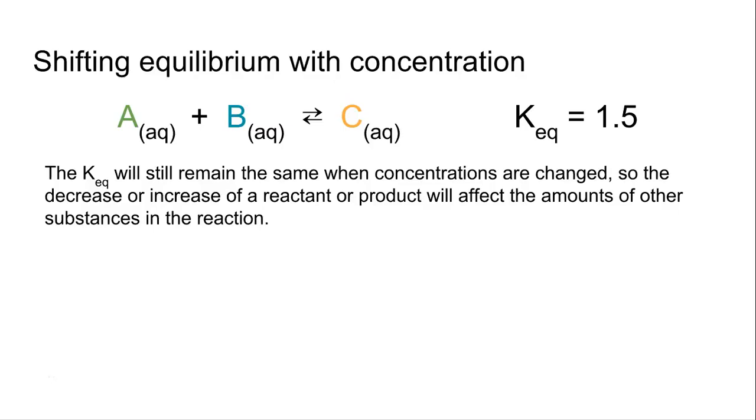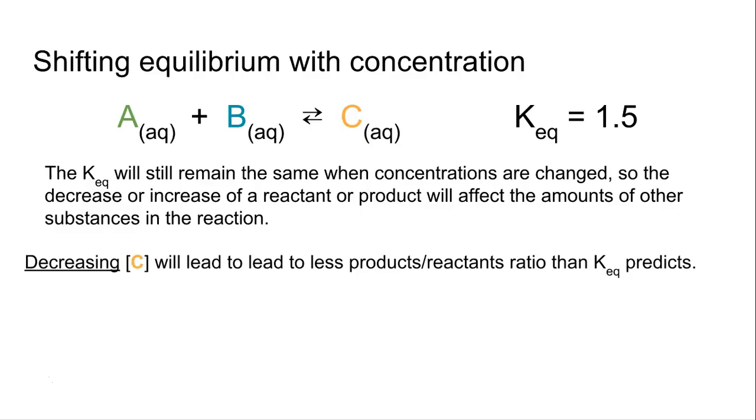So in this case, concentration, the Keq has to remain the same. So what we're going to look at here is imagine if I took some C away from this equation. I got rid of some C and I decreased its concentration. Well, that'll lead to a product reactant ratio that's less than what Keq should predict.